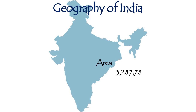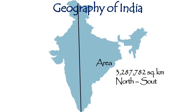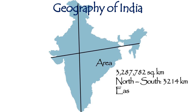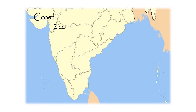Coming to the area of India, India has an area of 3,287,782 square kilometers. The length of India from north to south is 3,214 kilometers. In the same way, the length of India from east to west is 2,933 kilometers.